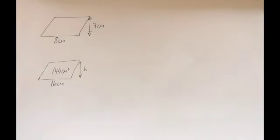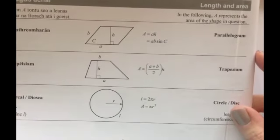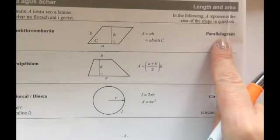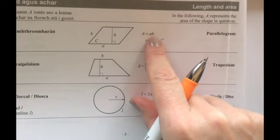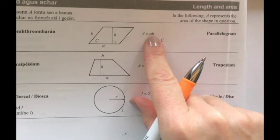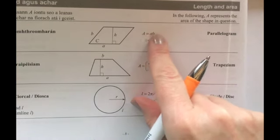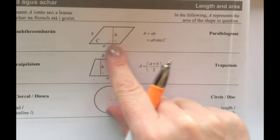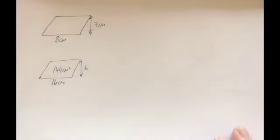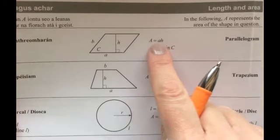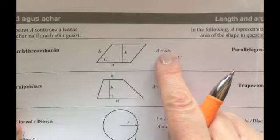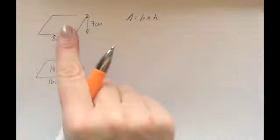Moving on now to parallelograms. We do have a formula for this in the log tables on page 8. We have A equals a·h — 'a' again stands for the base and 'h' stands for the height. The way I like to use it is A equals base times height. Although it's not written in that exact format in the log tables, it's enough to remind me what the area of a parallelogram is, and when two letters are written together like that it means times.